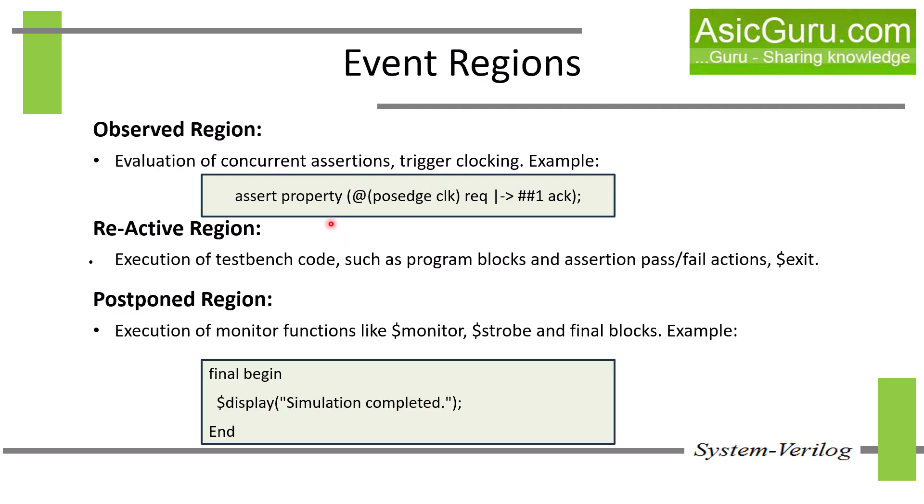As shown in the example, the value of rec is sampled in the prepone region and the assertion is evaluated in the observed region.